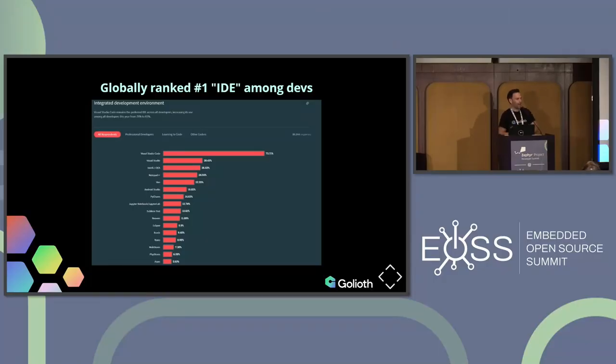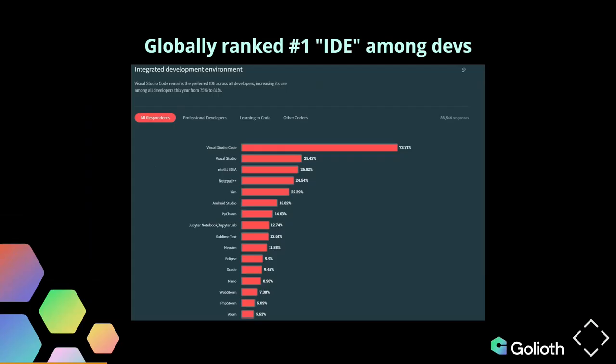VS Code is extremely popular categorically across all types of developers. This is the annual survey from Stack Overflow. Within two years of launching VS Code, it was the number one ranked IDE, second to Visual Studio, and the rest were pretty far behind. This includes web developers and mobile developers — they've actually surveyed embedded developers too. I use the word IDE because that's what Stack Overflow uses, and we'll try to unpack what that actually means.